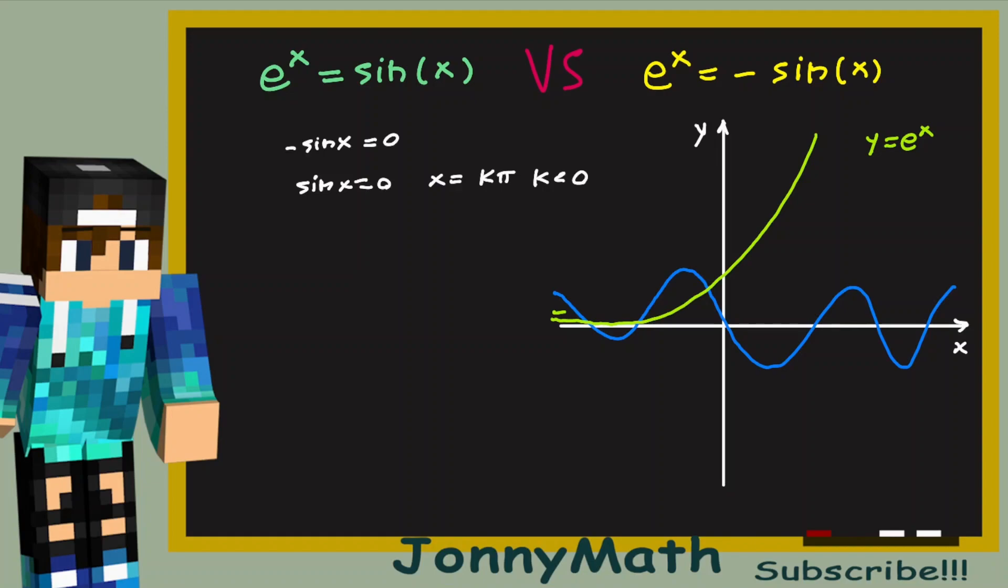But now we have another solution, this solution here. And this is much more complicated to find because, as you can see, the graph e to the x is not approximately zero. In fact, it is roughly 0.5. So, well, we cannot make this approximation to this point.